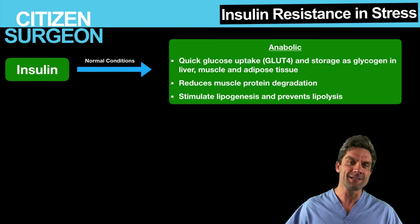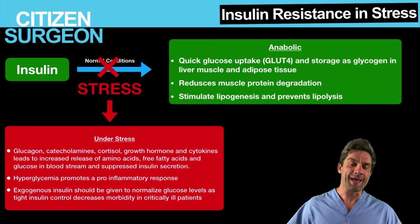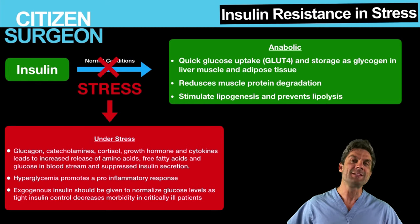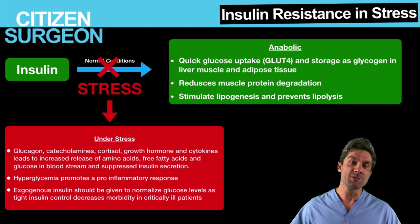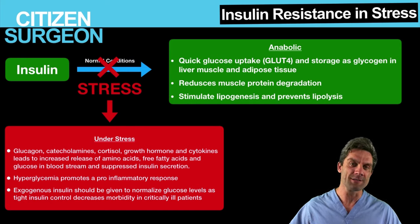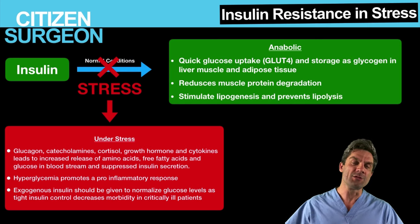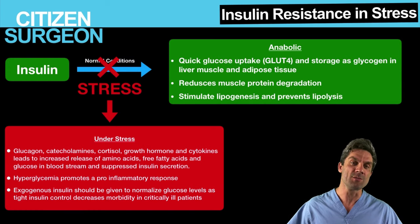Now take the stressed state. In the stressed state, glucagon, catecholamines, cortisol, growth hormone, and cytokines are all released. That leads to increased free fatty acids and amino acids in the bloodstream, but it suppresses insulin secretion and eventually creates insulin resistance. This resultant hyperglycemia leads to a pro-inflammatory response. As endogenous insulin is not being produced, it's important that you give exogenous insulin so that you can return glucose levels to the normal state. This leads to improved surgical outcomes and reduced morbidity.